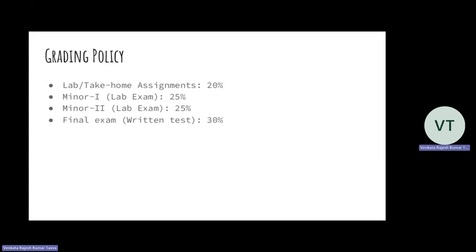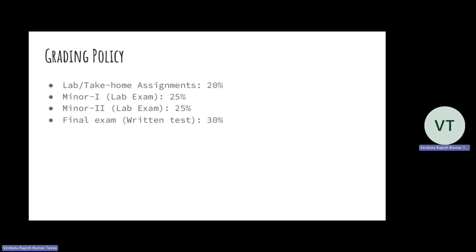This is the grading policy. You have labs and assignments, which are done in labs or sometimes even take-home assignments. Then minor one and minor two, both of which are lab exams, not written tests. The final exam is a written test. So as you can see, this course places a lot of weight on coding, on practical.